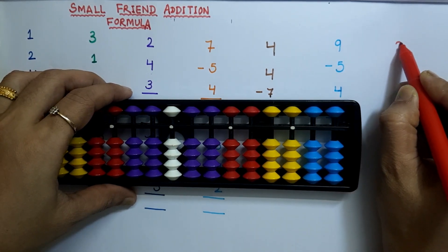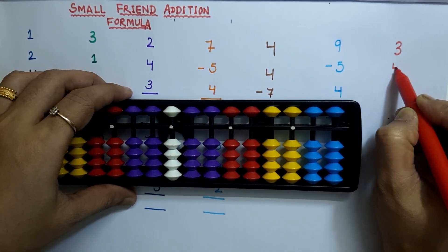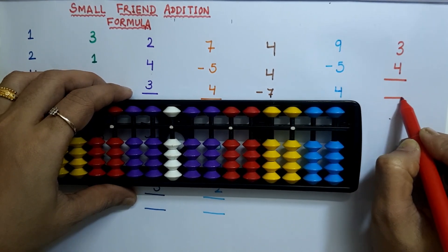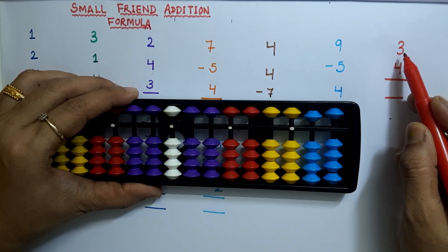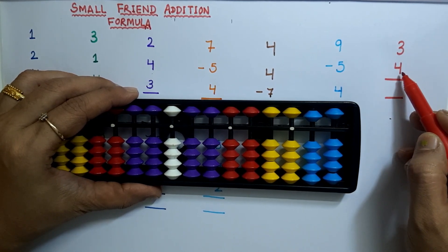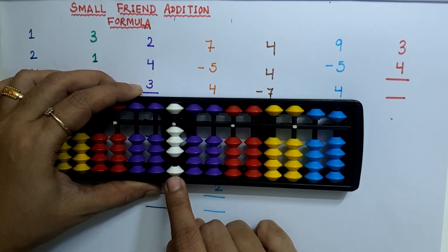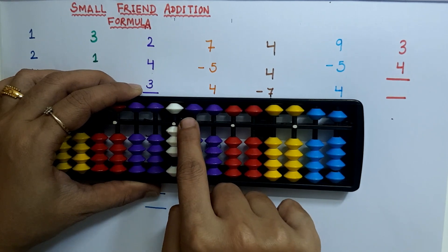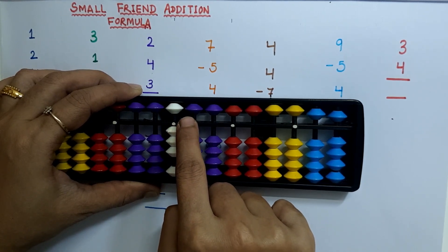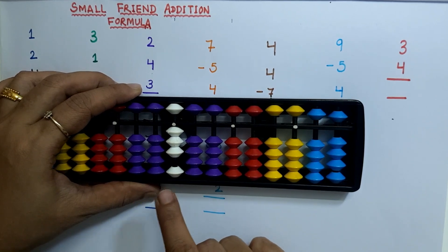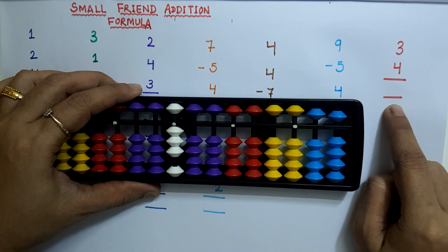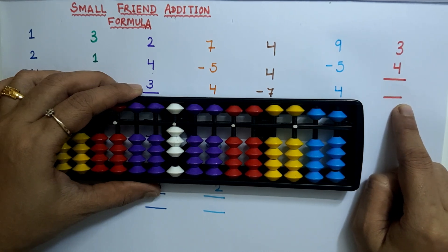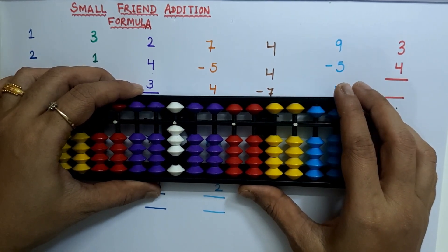Here we have an example: 3 plus 4. Suppose I have the number 3, and I'm supposed to add 4. For the addition of 4, I don't have 4 bits available at the lower deck, but I have the upper bits available whose value is 5. Using only the upper bits, how can we solve this type of sum? Let's see in this video.